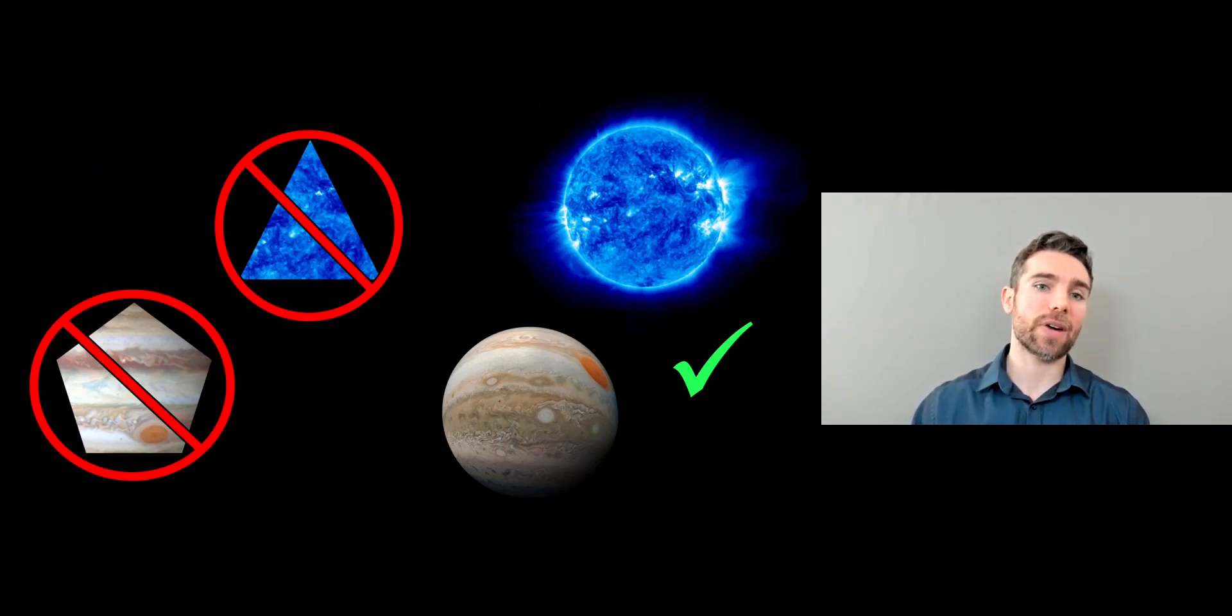Welcome to this video where we're going to have a look at the reason why things like planets, stars, some moons are round in shape or spherical and they're not any other sort of shape that they could be. So why are they actually round?